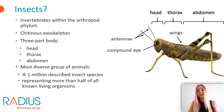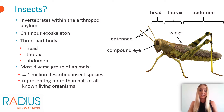Insects are the most diverse group of animals on the planet. There are more than one million described insect species, and in addition, they represent more than half of all known living organisms.